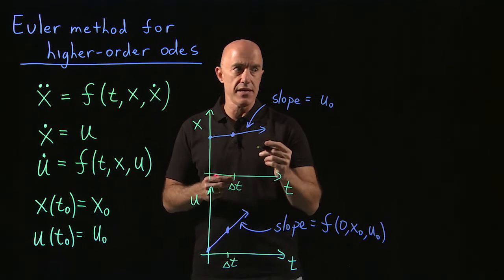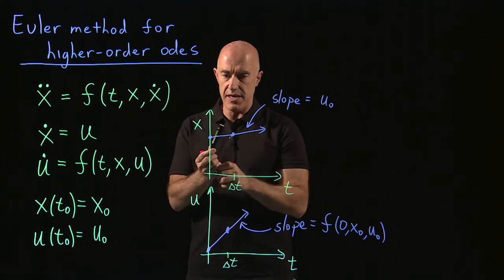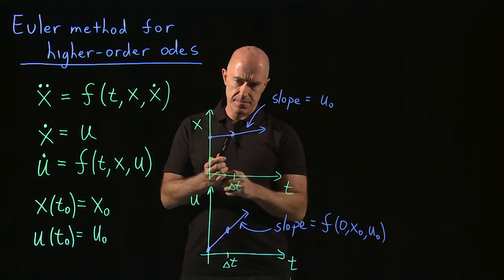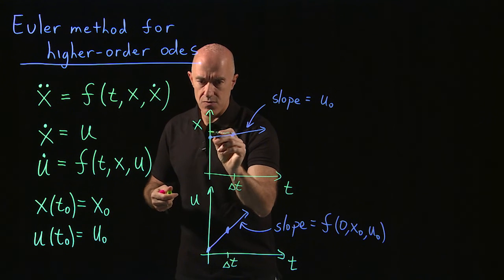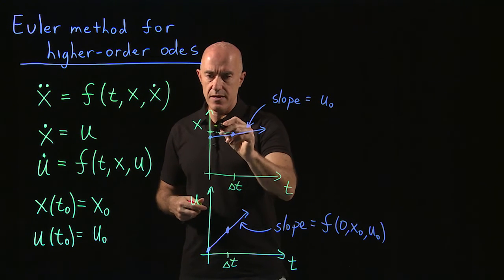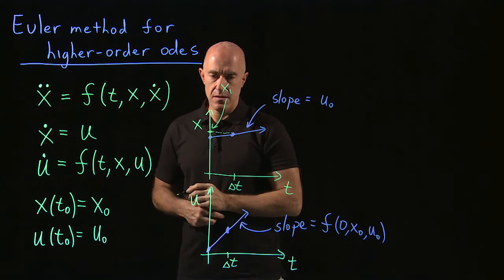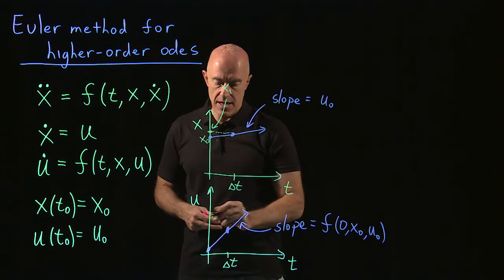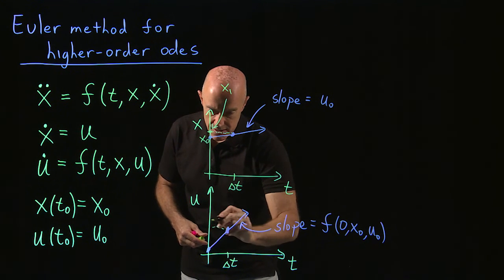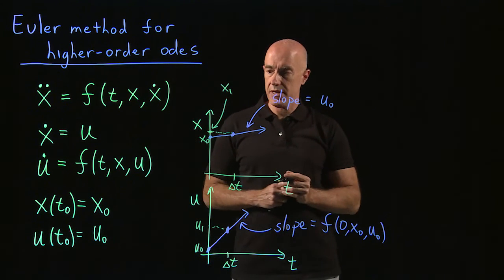So what is the formula here? So this would be, this value here would be the next value. So that's our x1. This is our x0. And this value here, that would be our u1, this is our u0.